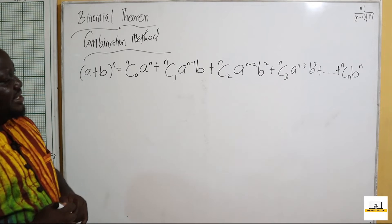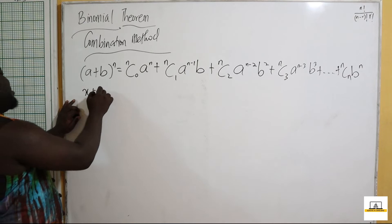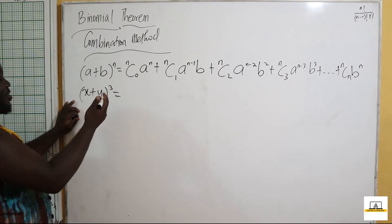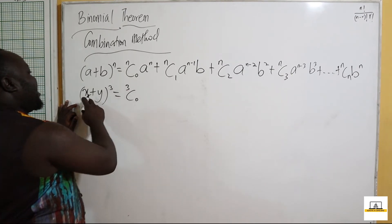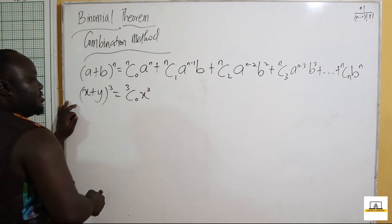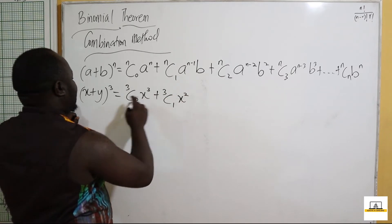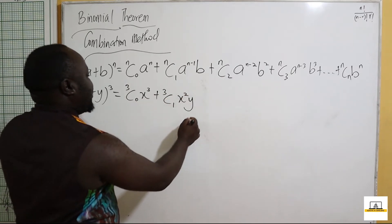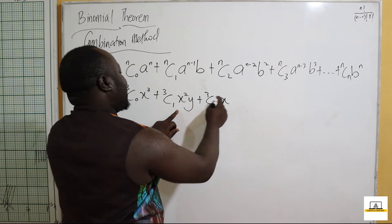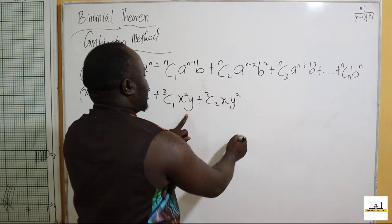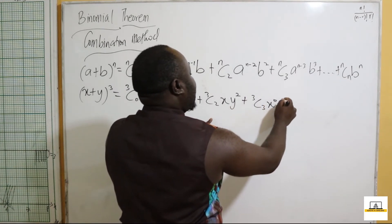So when we want to expand, say, (x + y) all raised to the power 3, this becomes: 3 combination 0 times x raised to the power of 3, plus 3 combination 1 times x raised to the power of 2 times y, plus 3 combination 2 times x times y raised to the power of 2, plus 3 combination 3 times x raised to the power of 0 times y raised to the power of 3.